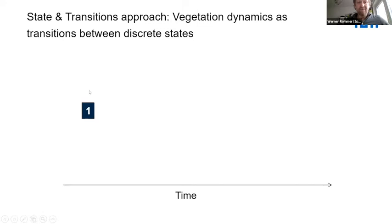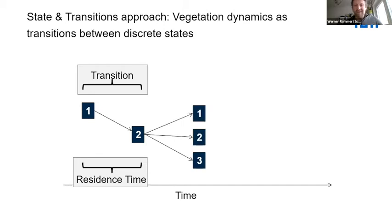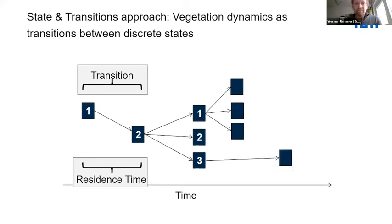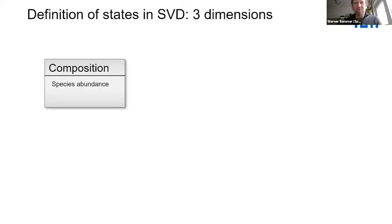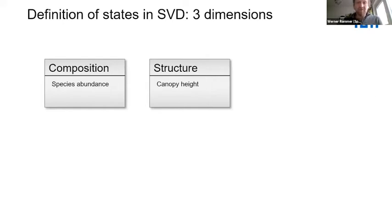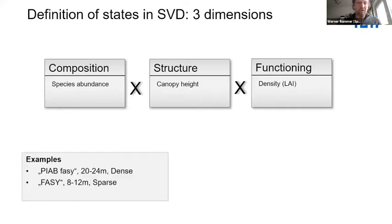The key idea is to have vegetation in concrete states, where changes in vegetation are expressed as transitions between discrete states. For example, a cell in state one can change over time to state two — this move is called a transition, which takes a certain time. The transition doesn't need to be deterministic; it can be probabilistic. In the SVD approach, states are defined along three dimensions: forest composition (species on the landscape), forest structure (captured by canopy height), and functioning (forest density). These are combined to yield simple, easy-to-interpret states — such as spruce-dominated states with some beech at a certain height and density class.